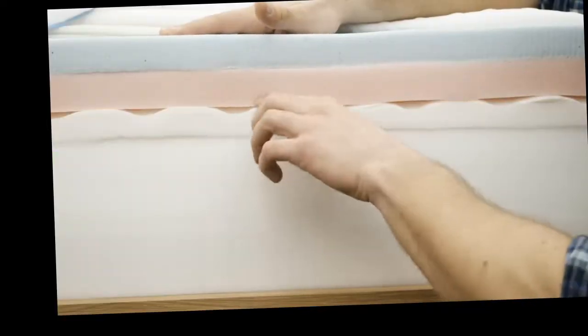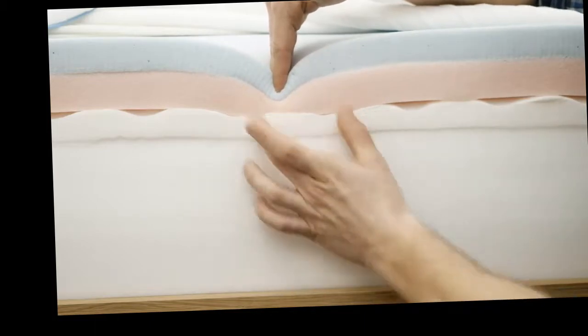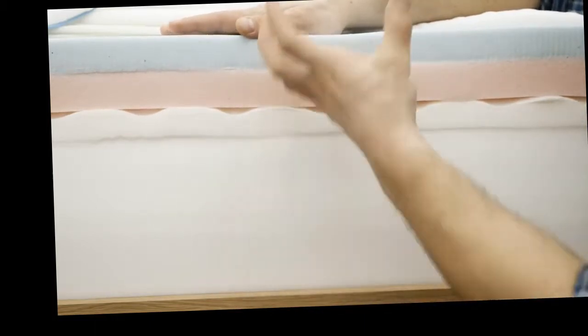Below that, we have this transition layer. It's a polyfoam that's a bit firmer than the other foams above it, and it just transitions you from these really soft foams on top into the support center of the mattress here.